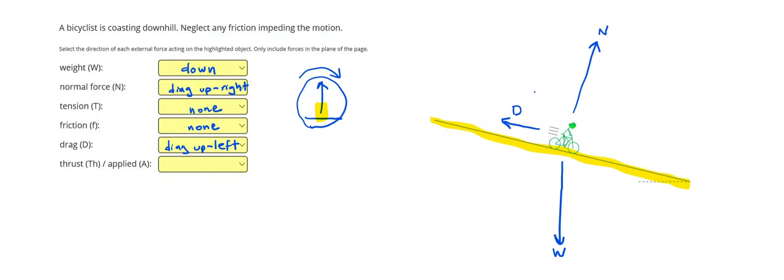All right, and then finally, it says thrust or applied force. If the bicyclist was pedaling, we would have one down to the right or acting in the direction that the bicyclist is going. But our problem says that the bicyclist is coasting down the hill. So we're going to put none.